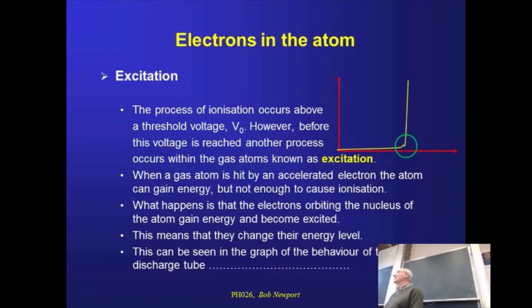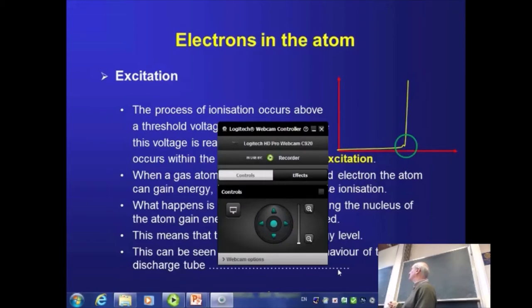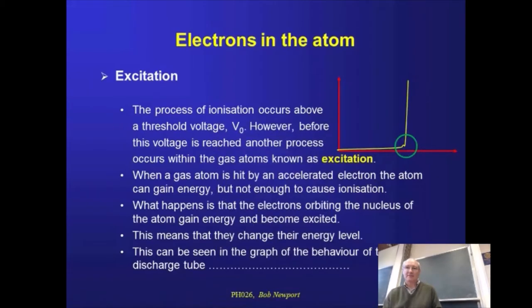When we looked at ionization, we had this sudden change of slope at a voltage which we termed the ionization potential. The energy associated with that was just E times V, the ionization energy in electron volts. There was an example of xenon, which is 12.1 electron volts from memory. We'll look at a few other ionization potentials as we go through.